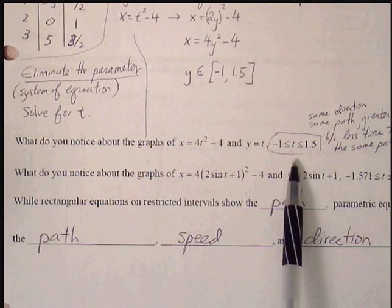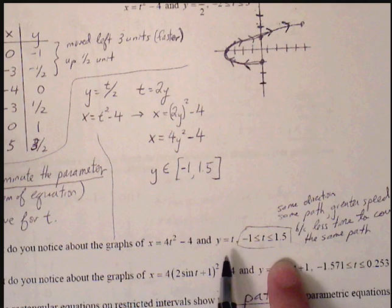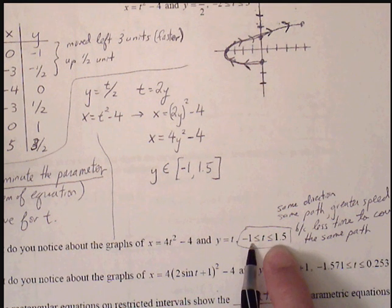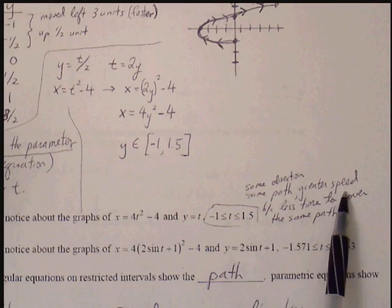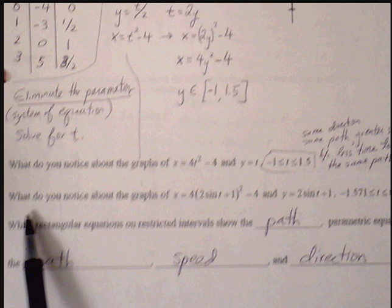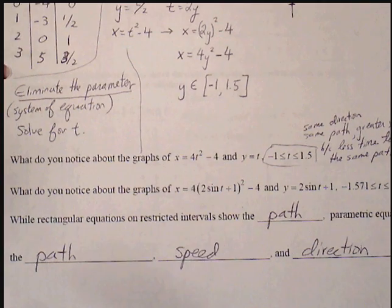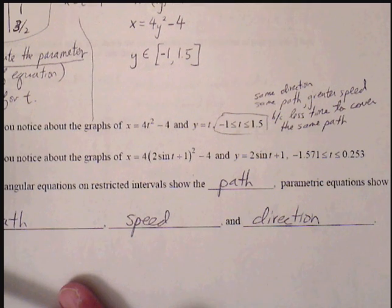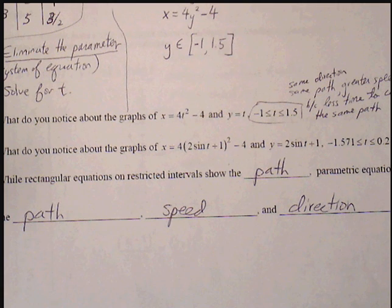When we plug this in, we're going to see that this will produce the same graph as this in the same direction. However, it is sketching the graph out in a smaller time period. And because it's sketching through a smaller time period, it's going to have to travel at a greater speed. The same thing will apply for the second equation as well. So rectangular equations on restricted intervals will show the path. Parametric equations will show the path and the speed and the direction. So we'll provide more information about the graph than a rectangular equation would.